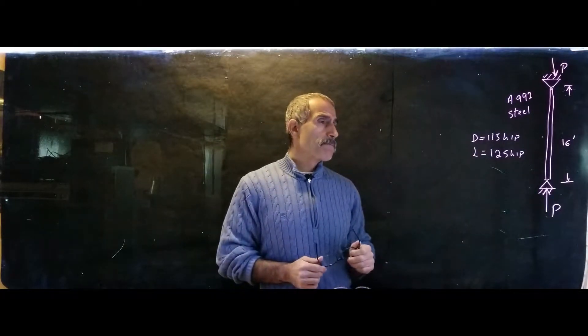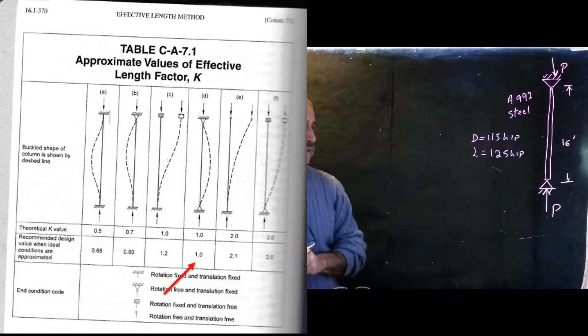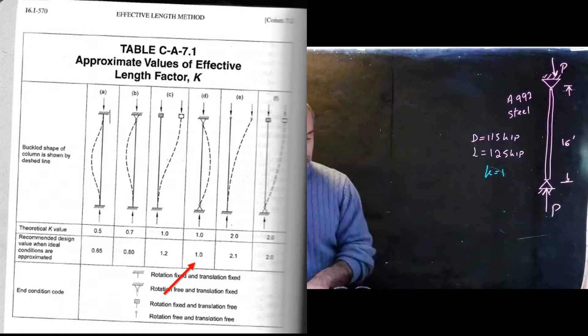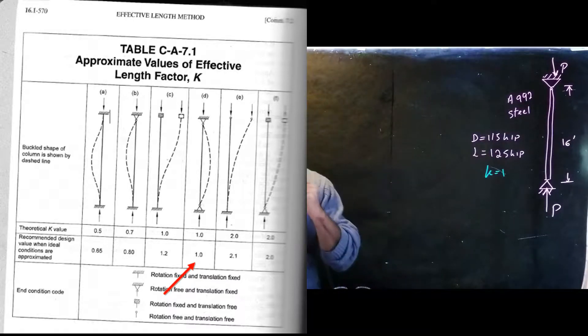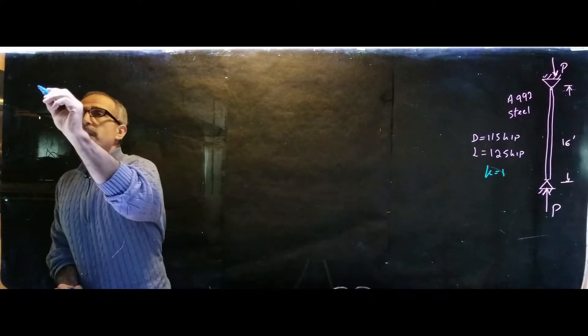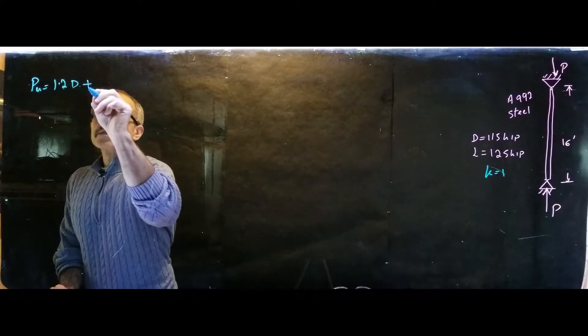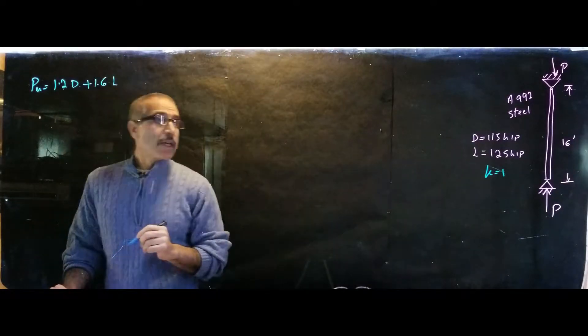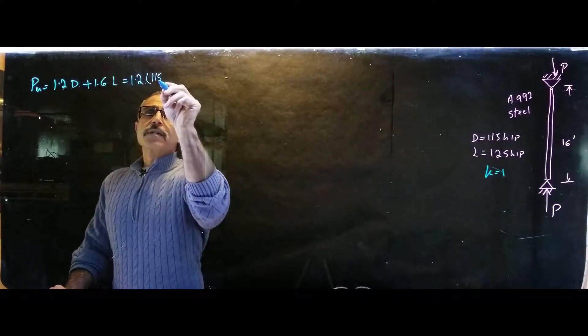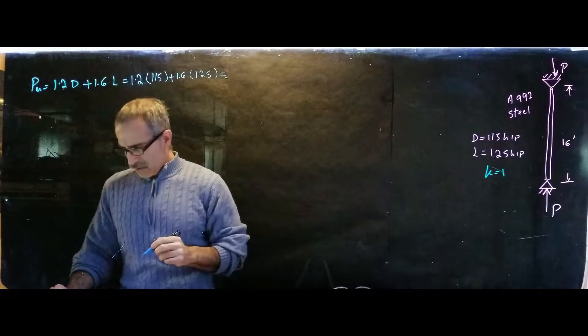One of the first things we're going to do is look at the effective length. If you look at the chart right here because it's pinned both ways your K is going to come out to equal 1. The next thing we're going to do is calculate the load based on AISC 7. The load is equal to 1.2 times dead load plus 1.6 times live load. That comes out to 1.2 times 115 plus 1.6 times 125, and I got 338 kips.